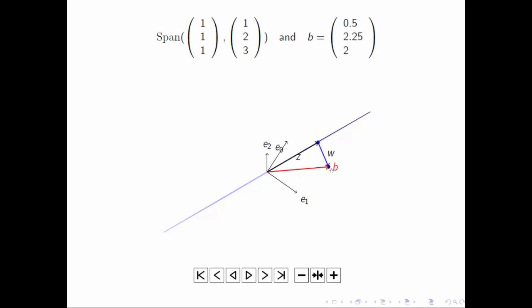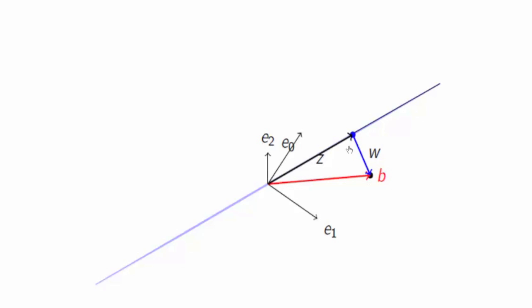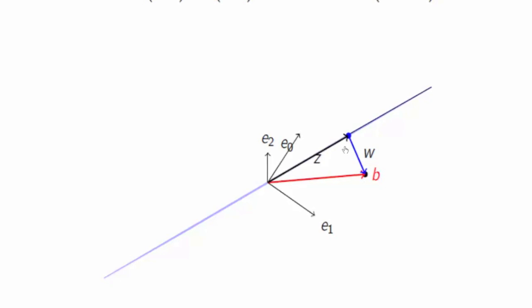What this particular freeze frame shows nicely is that B can be written as a vector that is in the column space of the matrix A. That's the vector Z, plus a vector that is perpendicular to it. And that makes this point that Z points to the point in the column space closest to the point to which vector B points.